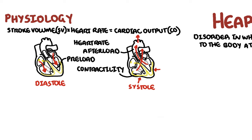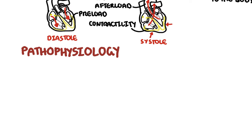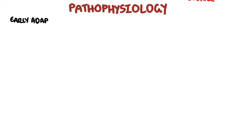Low cardiac output is a main feature in heart failure – the heart fails to pump blood to the rest of the body. When cardiac output is reduced, when the heart fails, a number of adaptations occur both in the heart and systemically. These include early adaptations and chronic adaptations.